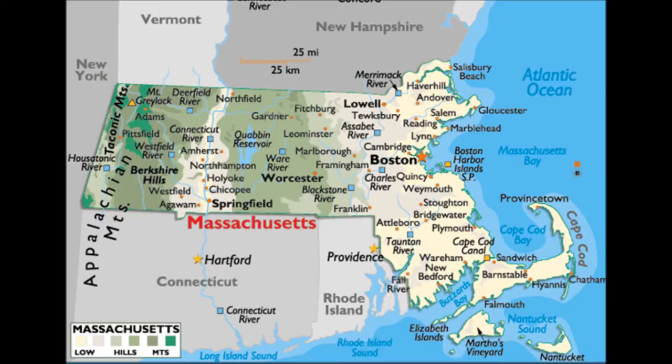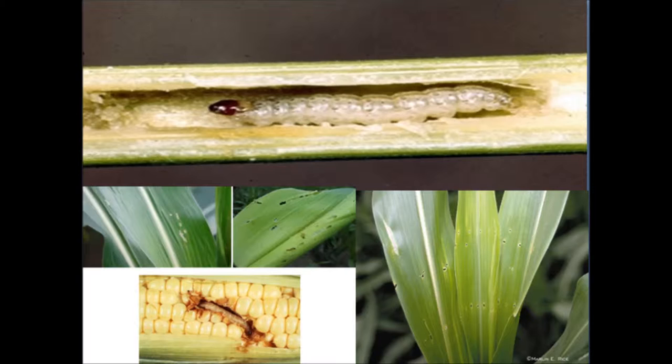The European corn borer is one of the ear boring, ear infesting insects that affect the marketability of the corn crop in North Carolina.